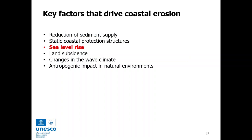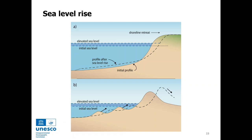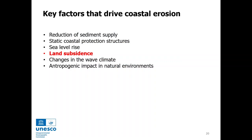Sea level rise is also another process that can promote coastal erosion. Global sea level is rising at approximately 3.3 millimeters per year, and this is a process expected to continue over time. With sea level rise, waves will reach higher levels at the coast, causing erosion of the upper part of the beach and deposition on the lower part. On sandy barriers, increasing water levels will promote more overwashes, causing sediment transport to the back barrier, and with time this process will lead to barrier migration landward.